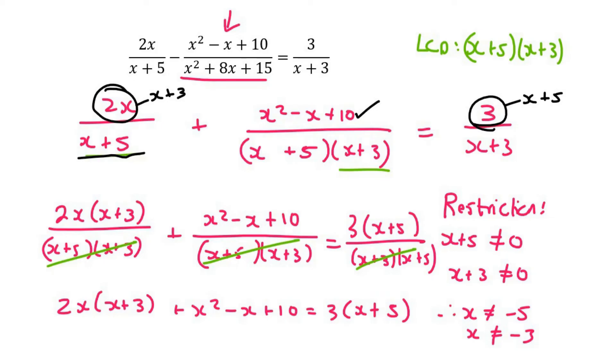Okay, so now we multiply out. That's going to give us 2x squared plus 6x plus x squared minus x plus 10 equals to 3x plus 15.